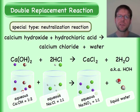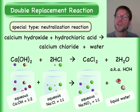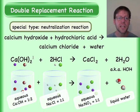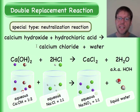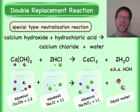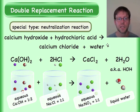Here's another double replacement reaction that is a specific type — within double replacement we can classify something called a neutralization reaction. The neutralization reaction is when you take OH⁻ and match them up with H⁺ and make water: you take a base and an acid, they neutralize each other, and you just get water out of it.